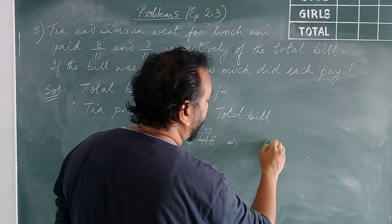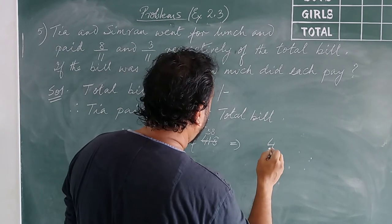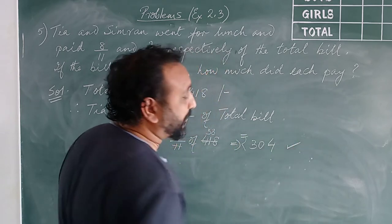8, 8s are 64, carry 6, 8, 3s are 24 and 6. This much amount Tia paid.